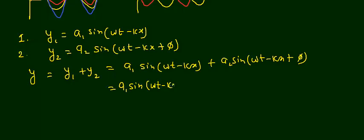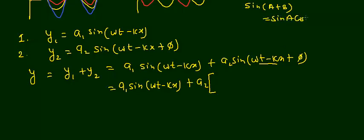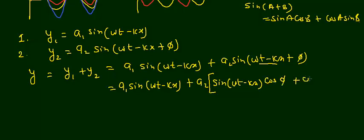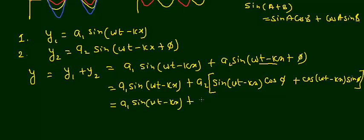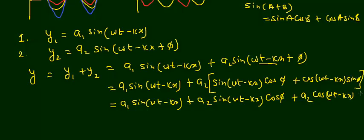I keep the first term as a₁ sin(ωt − kx). For the second term, I think of (ωt − kx) as 'a' and φ as 'b', and apply the formula sin(a + b) = sin a cos b + cos a sin b. This gives: a₂ [sin(ωt − kx) cos φ + cos(ωt − kx) sin φ]. Expanding fully: y = a₁ sin(ωt − kx) + a₂ sin(ωt − kx) cos φ + a₂ cos(ωt − kx) sin φ.